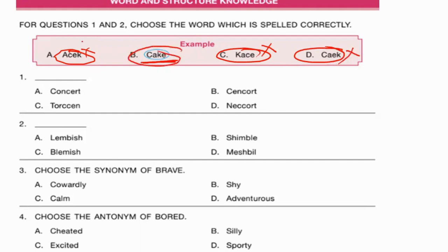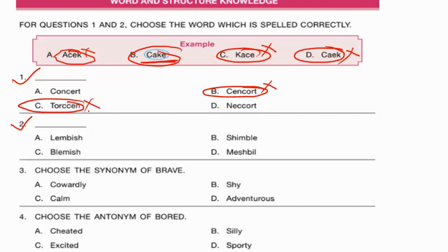For question two, you again find the word that makes sense and check the spelling. The first option is 'concert' — yes, a concert is a musical performance. Check its spelling: C-O-N-C-E-R-T — correctly spelled. The other options 'sensecourt', 'torsen', and 'necourt' are not real words. So the correct answer is concert, option A.